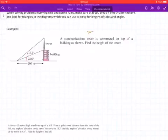We're doing some problem solving with sine and cosine rule. Let's have a look at this first question: a communications tower is constructed on top of a building as shown. Find the height of the tower. So we want to find the height just of this.